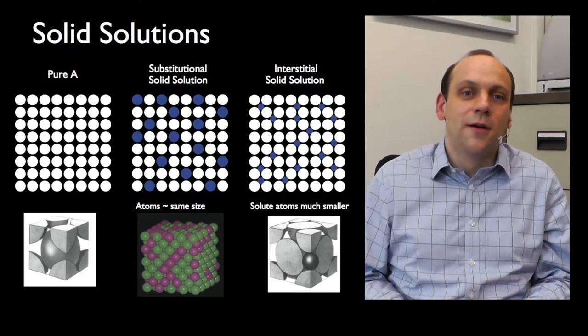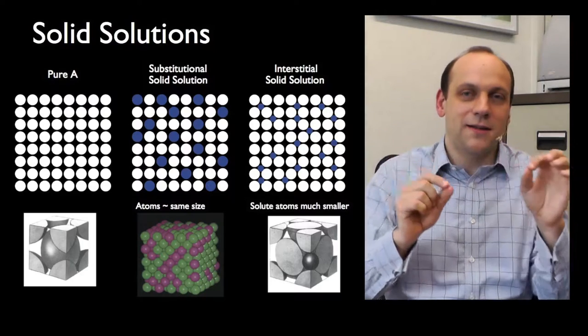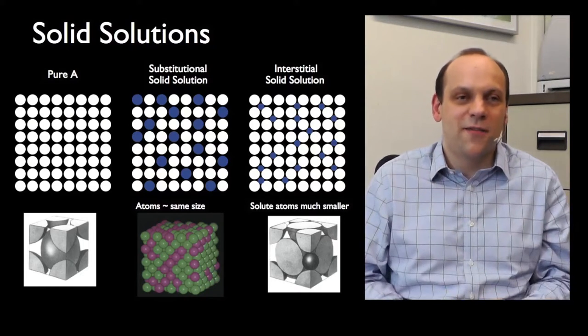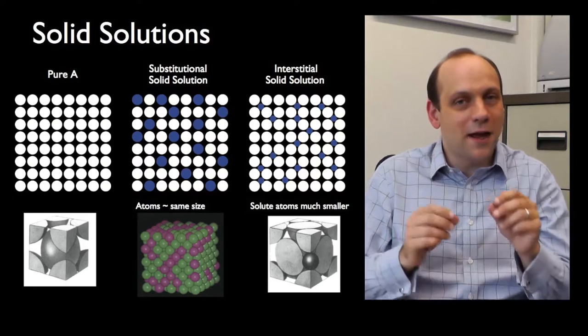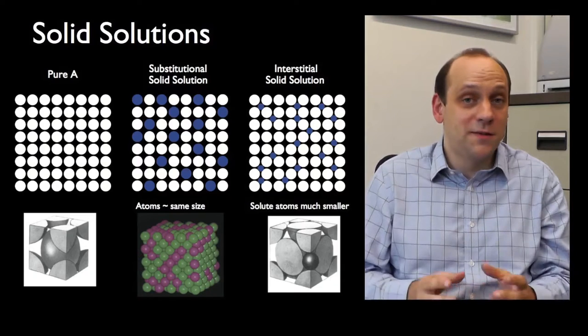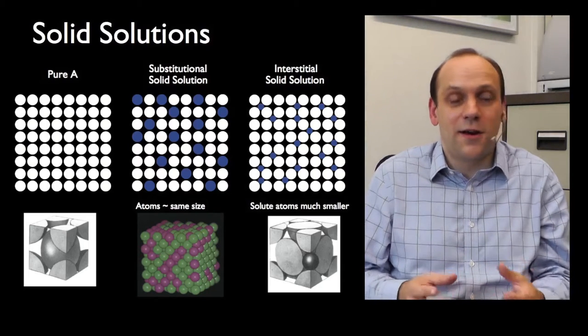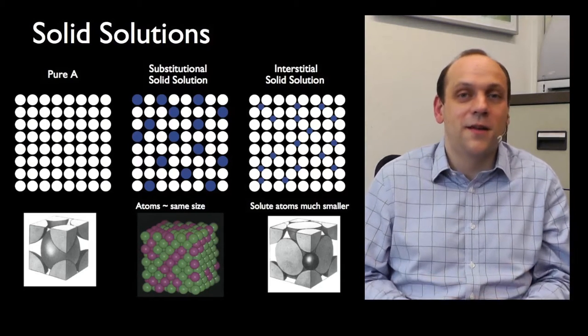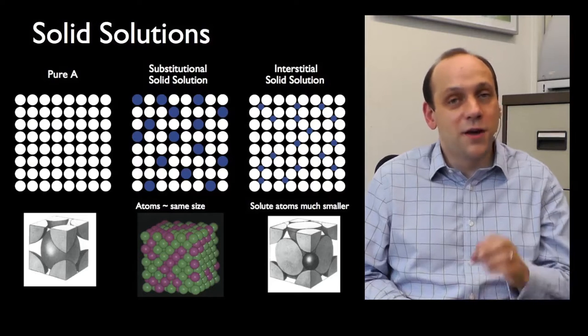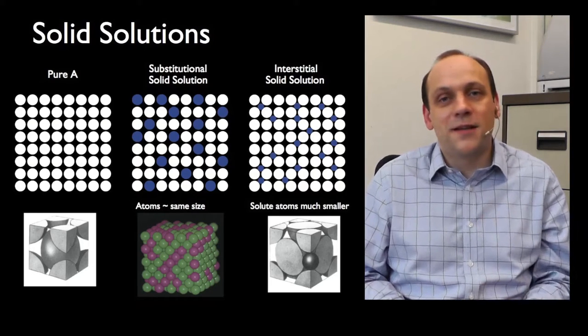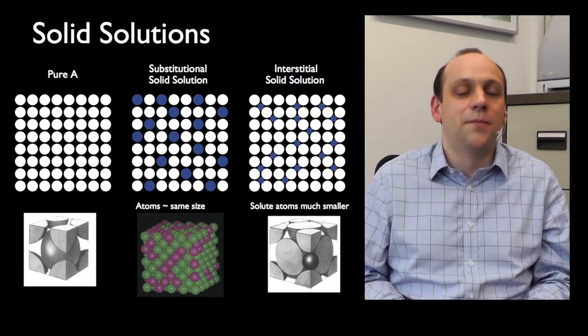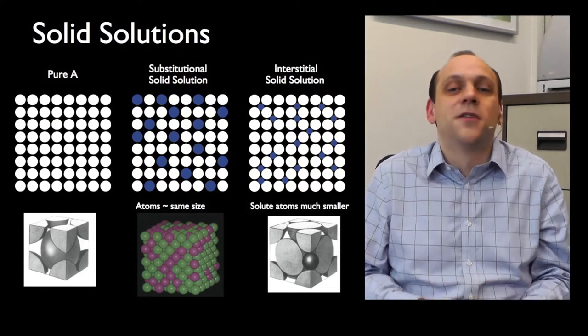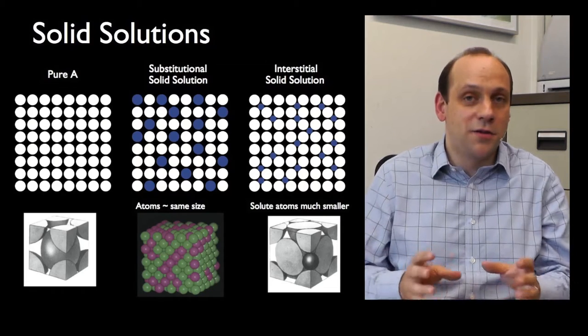There is another option. There are little gaps in the lattice between the atoms. If atoms are roughly spheres in a hard sphere model, there are gaps between the spheres. For very small atoms, things like carbon in iron or hydrogen in zirconium, those can go in the gaps. We call the gaps interstices, so they're called interstitial solutions.